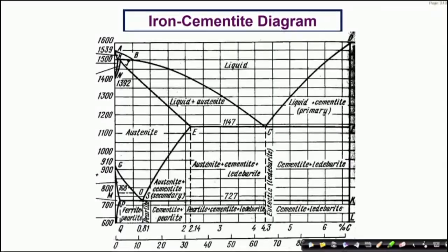I am talking about steel. If you look at the very first viewgraph, this is a very well-known phase diagram — essentially an equilibrium diagram, but to be more precise this is a metastable equilibrium diagram because we are dealing with iron-cementite, where cementite is not truly an equilibrium product. But for all practical purposes, because cementite does not transform at room temperature, we consider this to be as good as an equilibrium phase diagram.